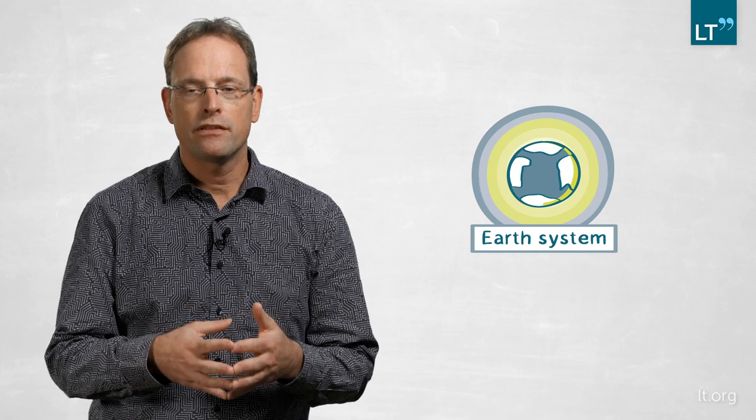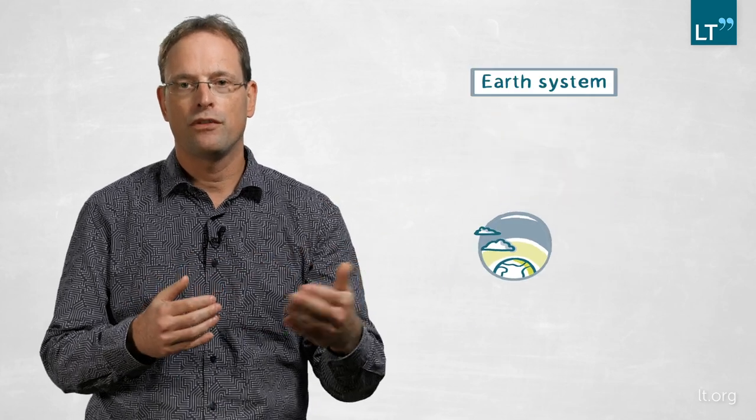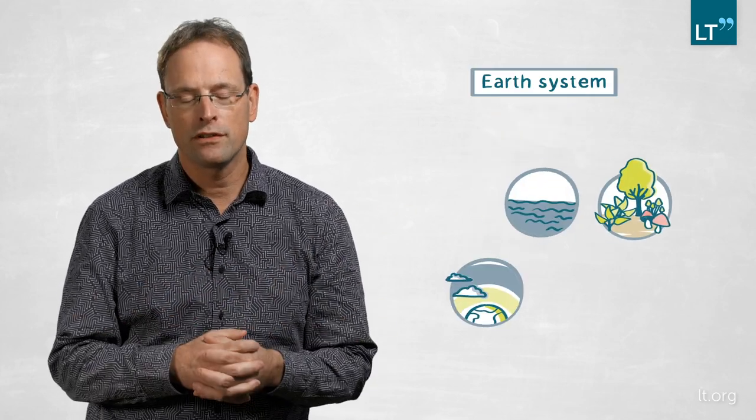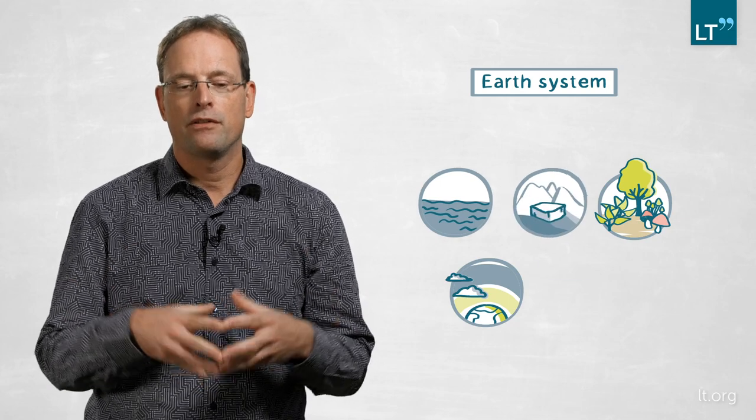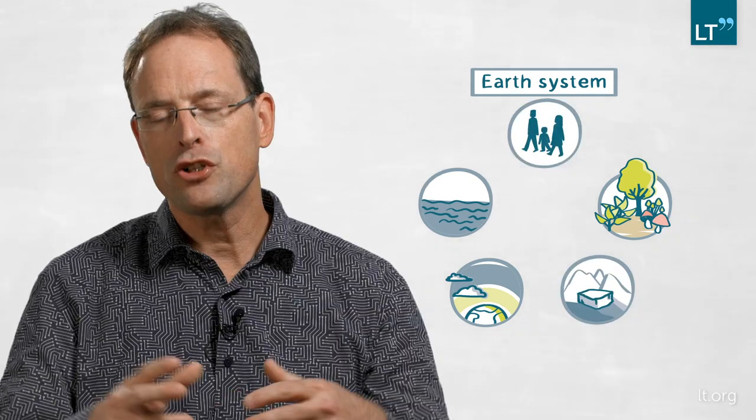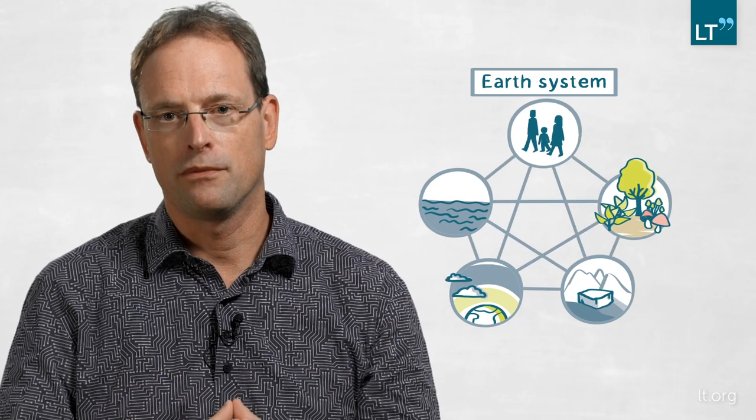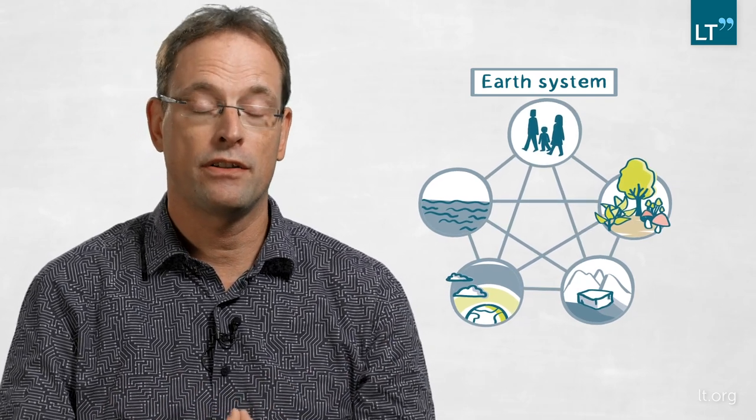Conceptually, the Earth system is divided into different spheres, like the atmosphere, the biosphere, the oceans, the cryosphere, for example, and also the humans now, the anthroposphere, which interact with each other in these complex systems. This is very challenging to understand and to model.